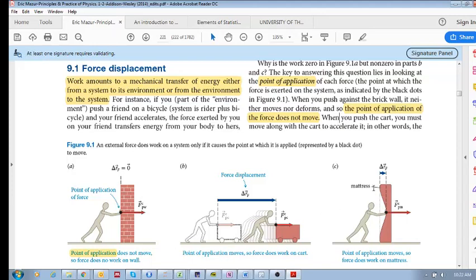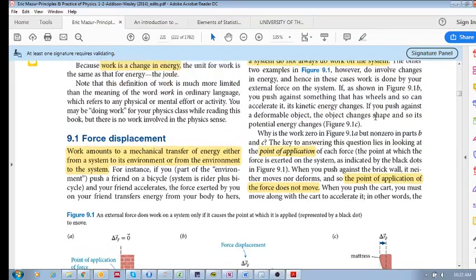What about this example? Here, we see there's not necessarily a kinetic energy change, but there is a deformation. There's an internal energy change. There's a potential energy change because the point of application has moved. So, here, the person does do work on the mattress.